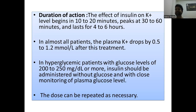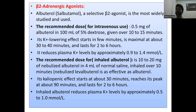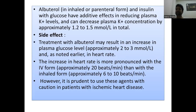Beta-2 adrenergic agonists such as salbutamol shift potassium into cells. The recommended IV dose is 0.5 mg of albuterol in 100 mL of 5% dextrose over 10 to 15 minutes — onset within minutes, maximum effect at 30 to 40 minutes, lasting 2 to 6 hours, reducing potassium by 0.9 to 1.4 millimoles per liter. Nebulized albuterol 10 to 20 mg in 4 mL normal saline inhaled over 10 minutes — onset 30 minutes, peak at 90 minutes, lasting 2 to 6 hours, reducing potassium by 0.5 to 1 millimole per liter. Combined with insulin and glucose, albuterol reduces potassium by approximately 1.2 to 1.5 millimoles per liter in total. Use with caution in ischemic heart disease due to tachycardia, especially with IV form.